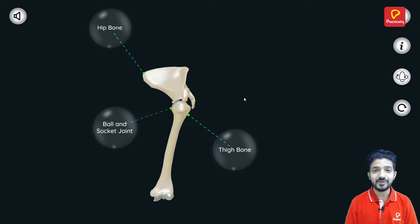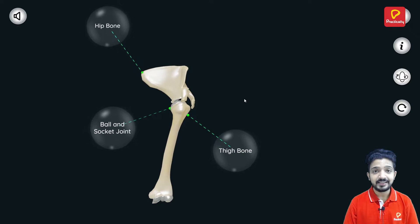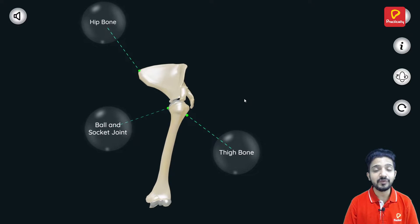The second type of joint is the ball and socket joint. In this type of joint, one surface of the bone is curved and another is like a ball so that it freely rotates around it. And here on the screen, you can see the hip bone and the thigh bone of Mr. Boni.